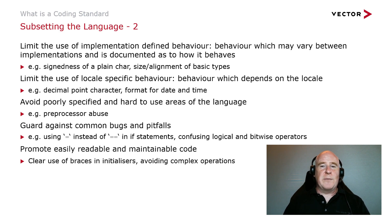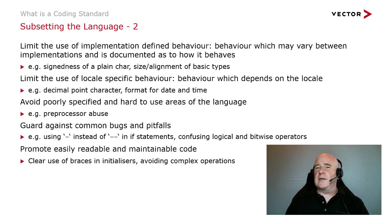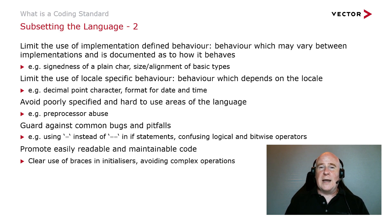We want to limit the use of implementation-defined behavior — behavior where the implementation behaves in a particular documented way — for example, whether a plain char is implemented as a signed or unsigned data type, and the size of basic types. We also limit the use of locale-specific behavior, avoid poorly specified and easy-to-misuse areas of the language, and guard against common bugs and pitfalls, for example confusing assignment with comparison in if statements, and confusing logical and bitwise operators where the code is perfectly legal but may behave in an unexpected way. There's also clear use of braces in initializers, avoiding complex operations to make the code maintainable and easy to read.